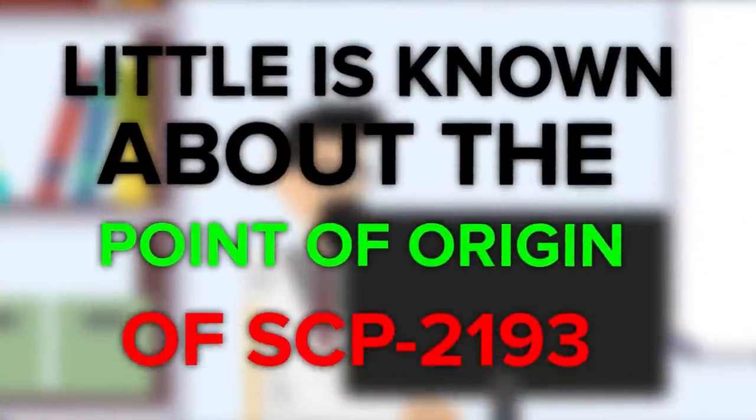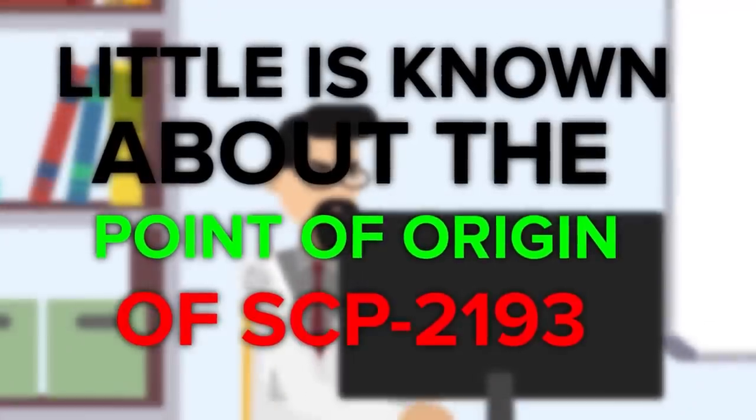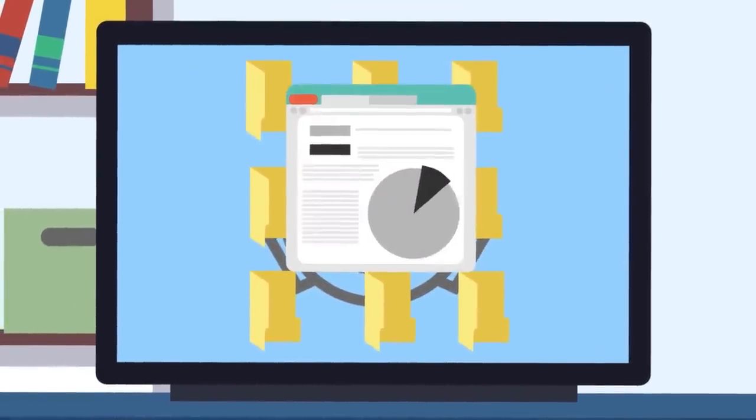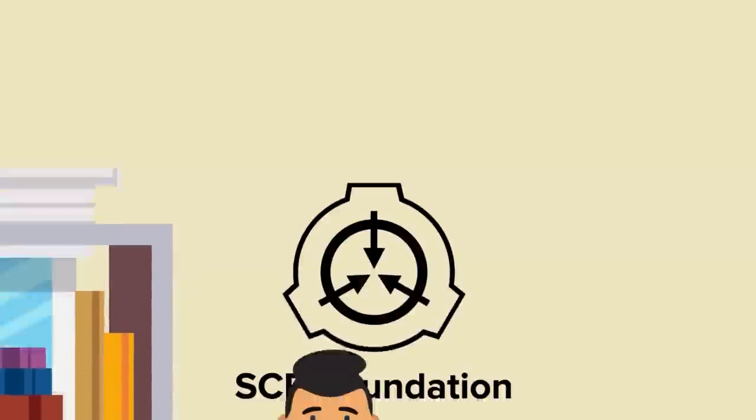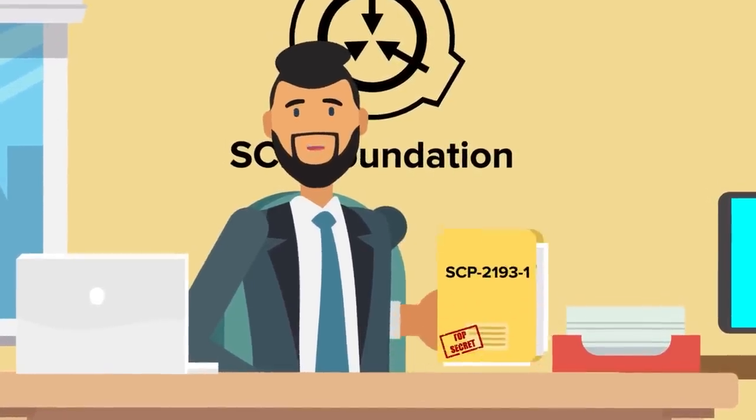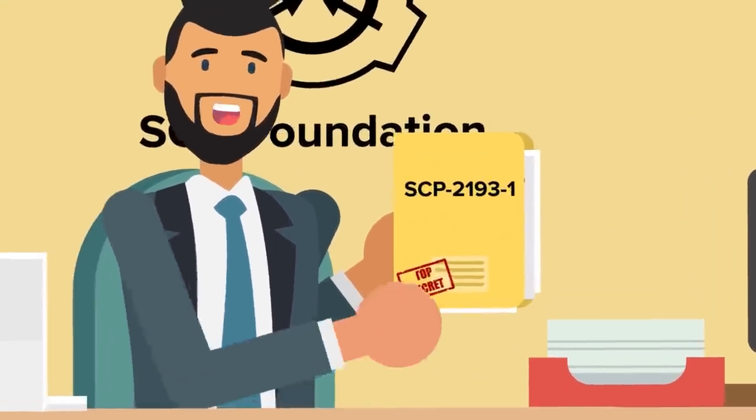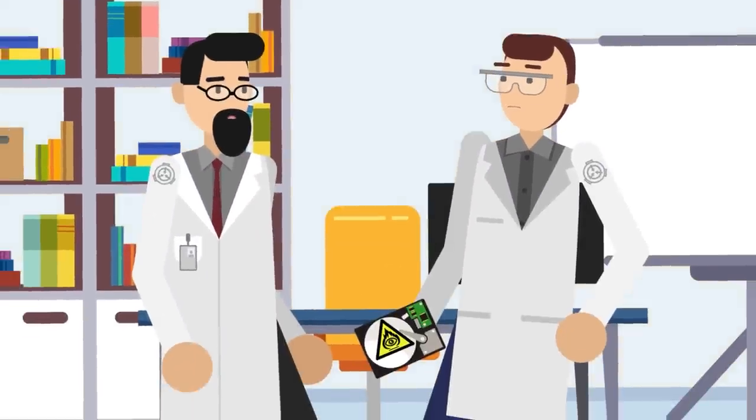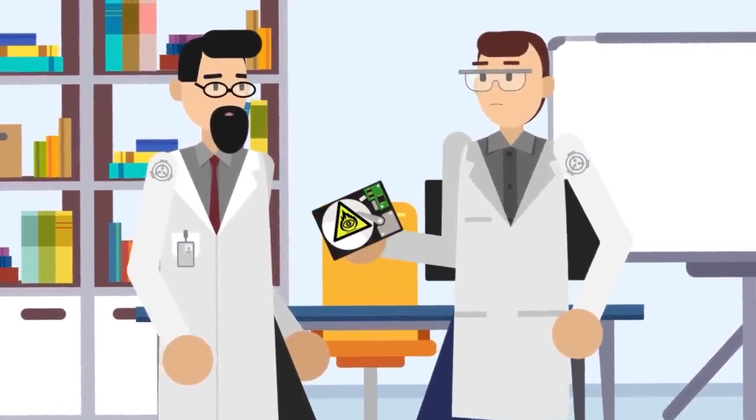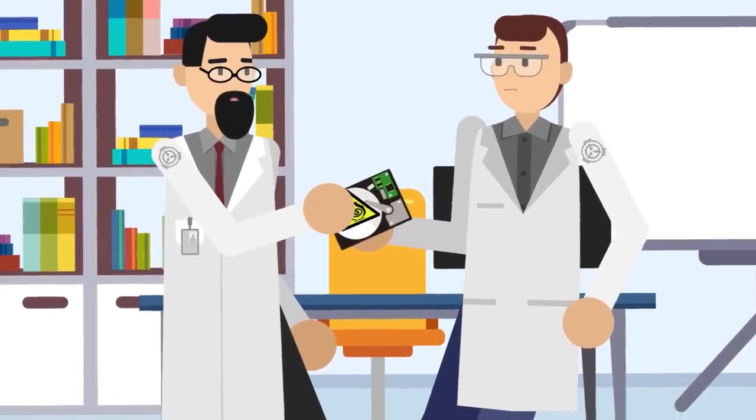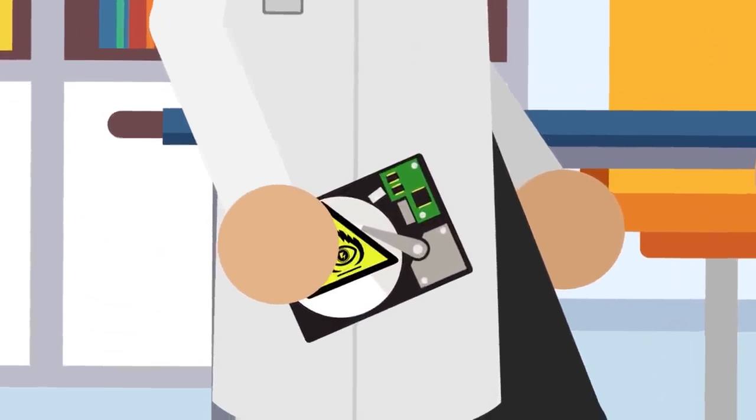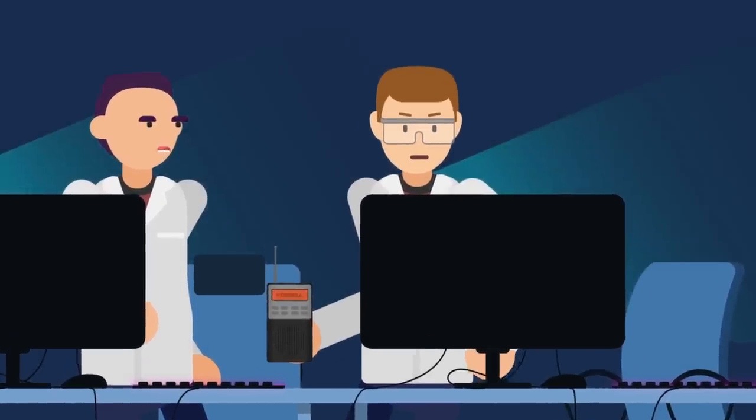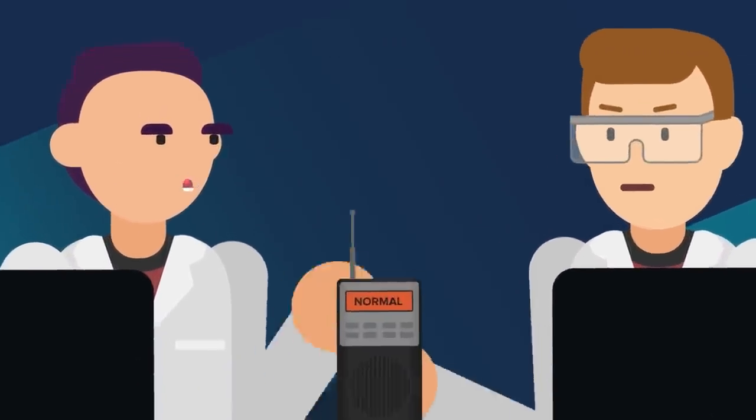Little is known about the point of origin of SCP-2193. While it affects the documents stored within the Foundation's database, it does not function like a computer virus or artificial intelligence. Instead, SCP-2193-1 is an anomalous piece of information, or an info-hazard. As SCPs like this are known, it has been known to infect digital files, specifically the special containment procedures for various entities, objects, and creatures that the Foundation has recorded in its archives. Even their most talented computer engineers and anomalous researchers cannot determine how this info-hazard is able to accomplish this.